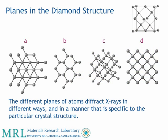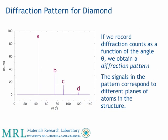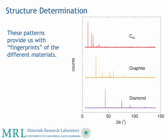When X-rays go through crystals, they diffract — the X-rays split in different directions. Different planes of atoms diffract X-rays in different ways, and in a manner that is specific to the particular crystal structure of a compound. An X-ray diffraction experiment measures these different planes. The signals in the pattern correspond to different planes of atoms in the structure. This is how we gain information about the structure of a material. This technique can provide us with fingerprints of the different materials. Each X-ray diffraction pattern for different materials is very distinct. Here we see the fingerprint of carbon-60, graphite, and diamond — they are very different from each other.